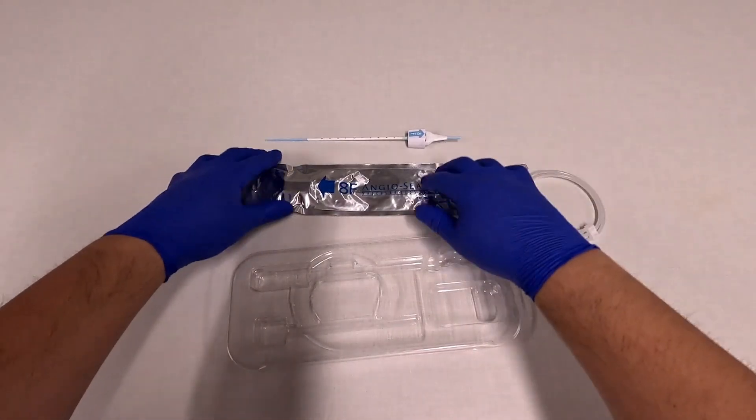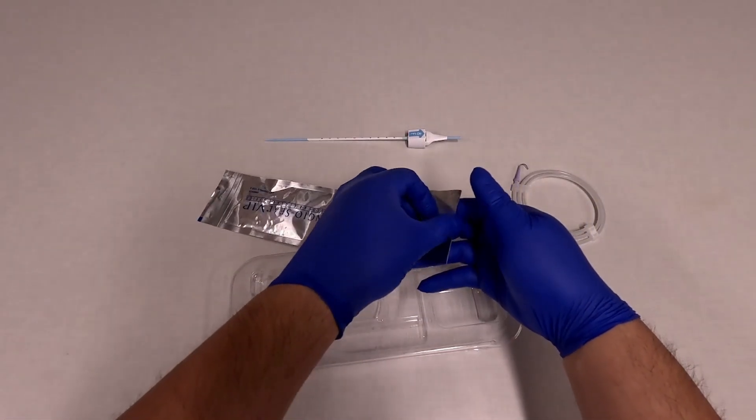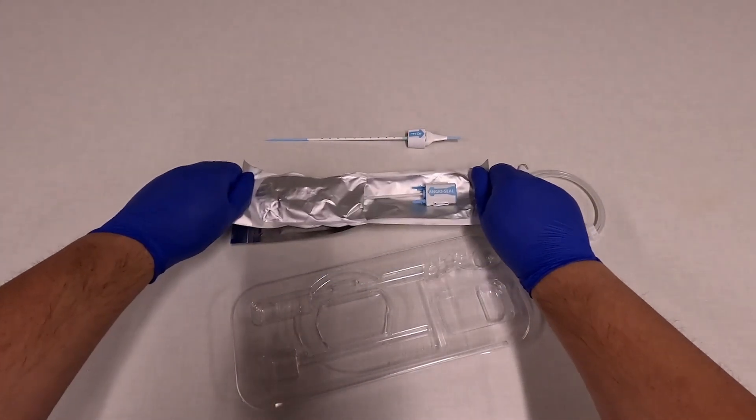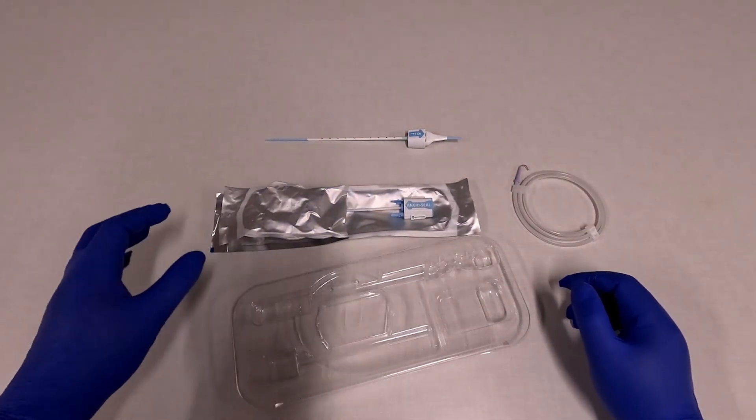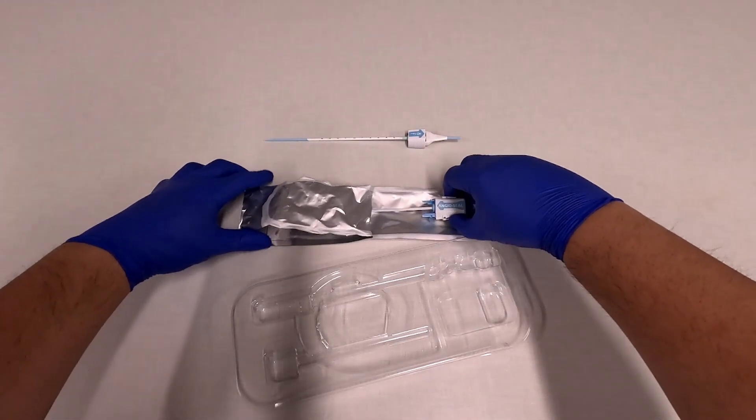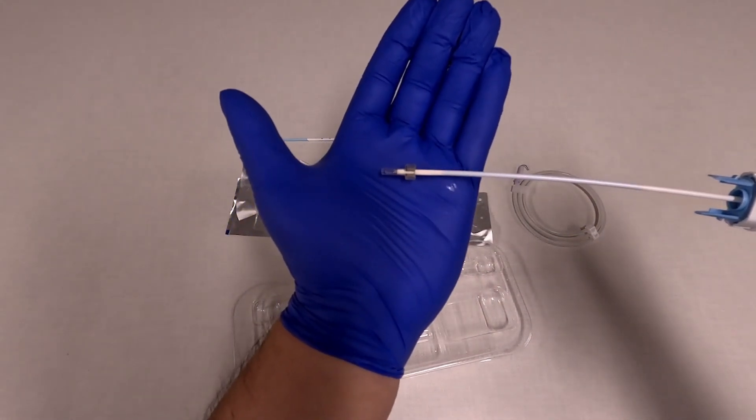You also get the second packet here in the foil package. Open this from the side that's indicated. I usually keep it half open on the table because you don't want to get the tip wet. But I'm going to show you what it looks like by taking out the rest of it. So you can see the footplate and the collagen plug at the end here.